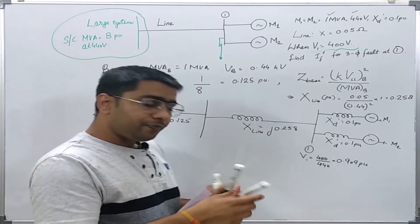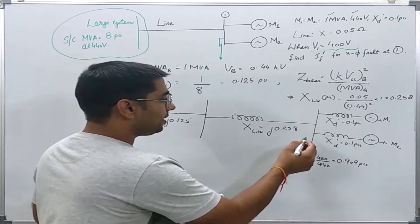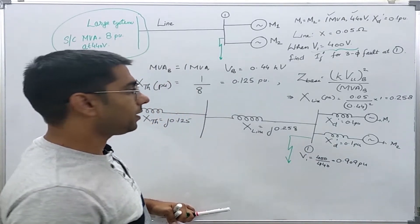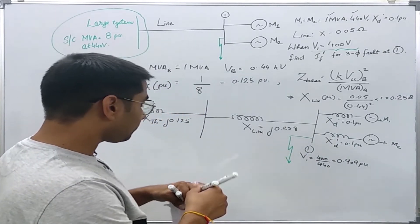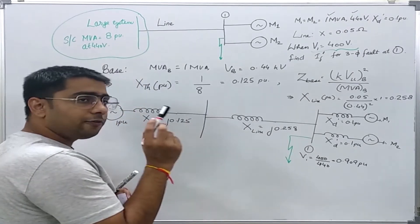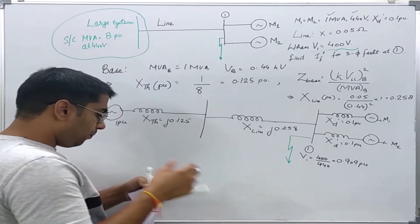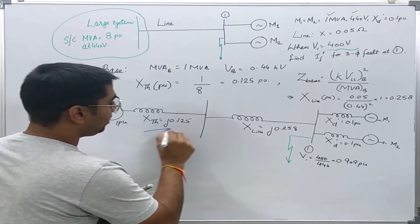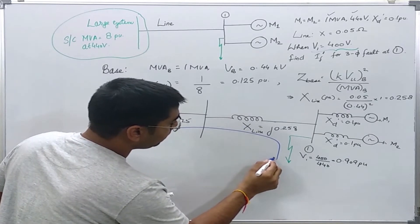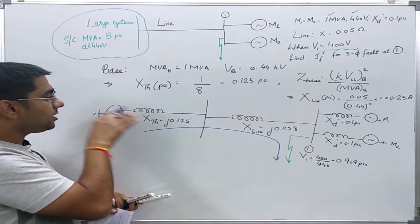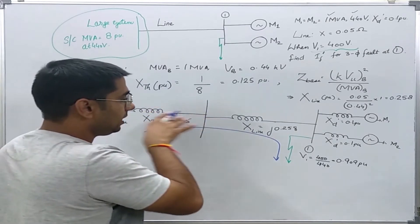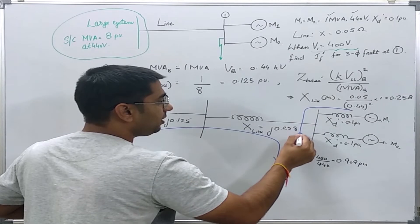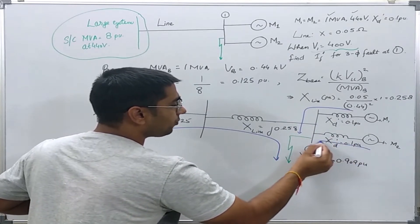Assuming a three-phase fault at bus 1, the fault current comprises two parts: one fed from the power system side and one fed from each of the two motors.